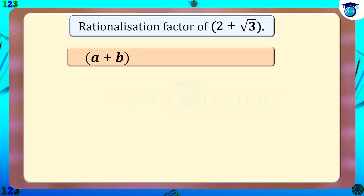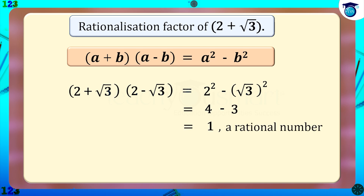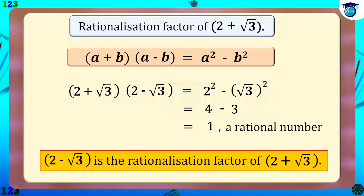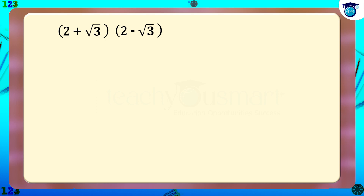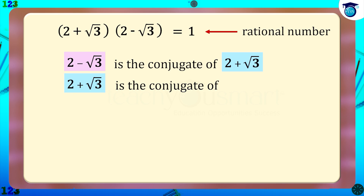We know that (a + b)(a − b) = a² − b². So if we multiply (2 + √3) by (2 − √3), we get 2² minus (√3)², which equals 4 minus 3, equals 1, which is a rational number. Therefore, 2 minus √3 is the rationalization factor of 2 plus √3. Here, 2 minus √3 is the conjugate of 2 plus √3, and conversely, 2 plus √3 is the conjugate of 2 minus √3.